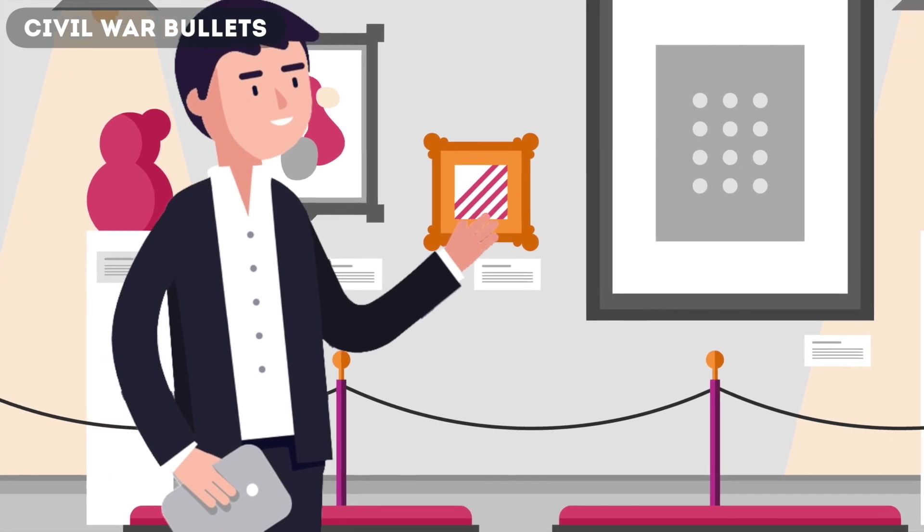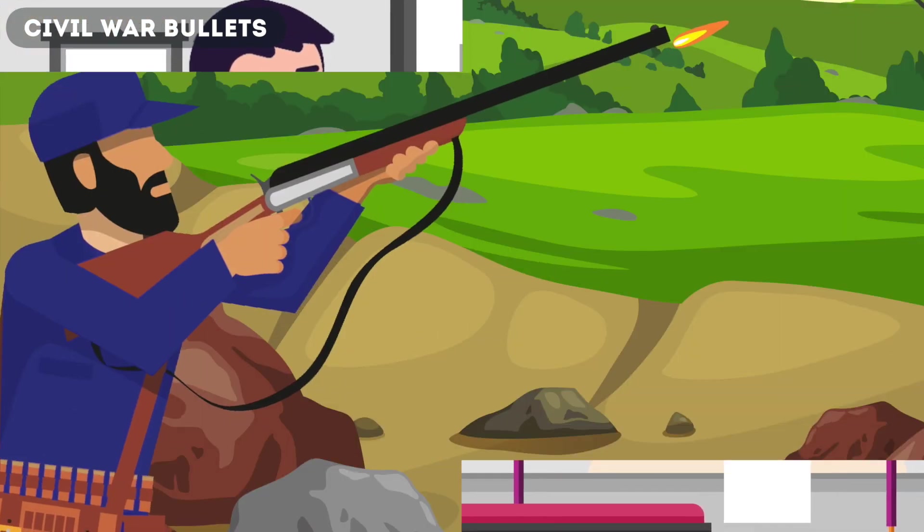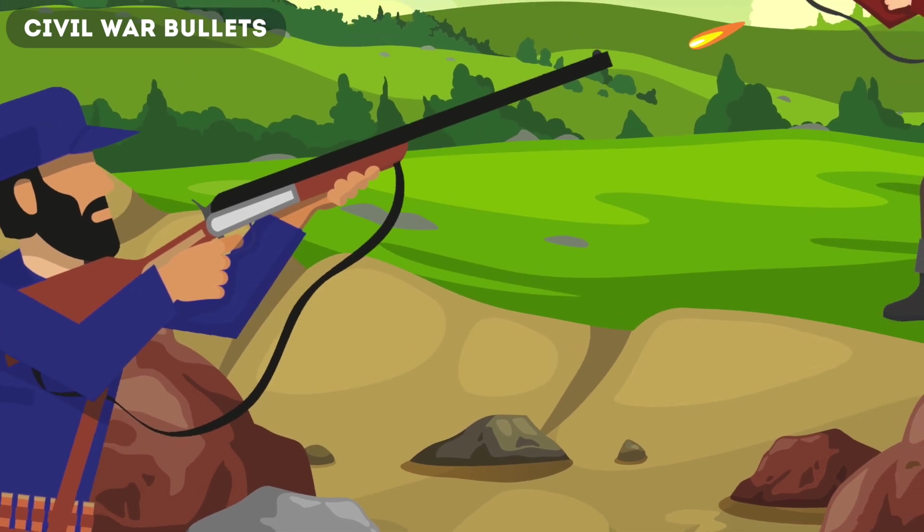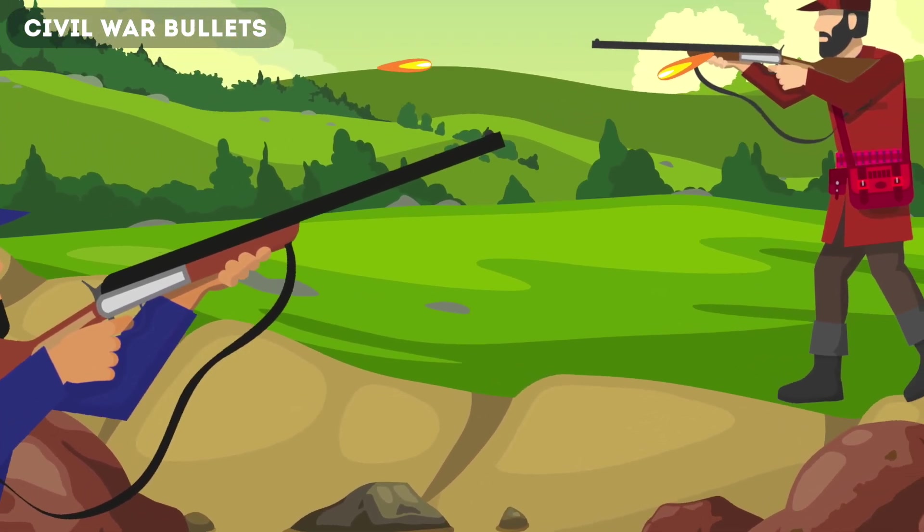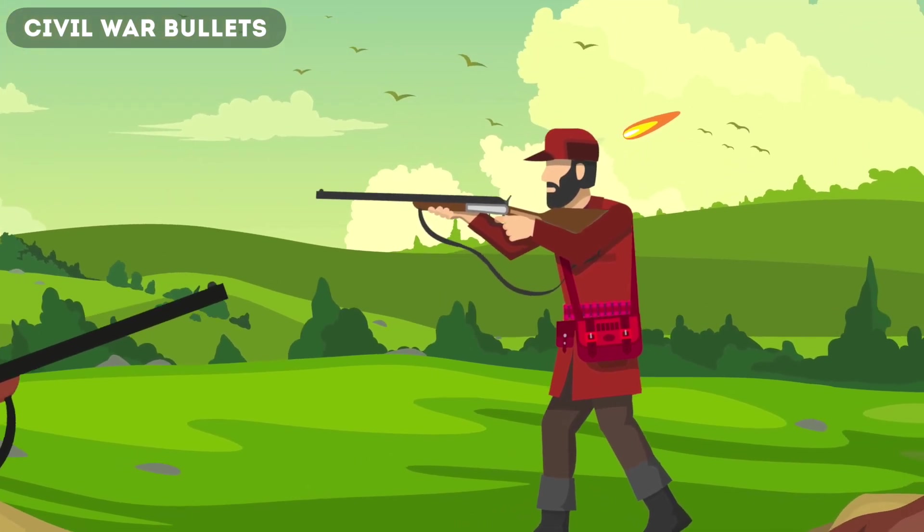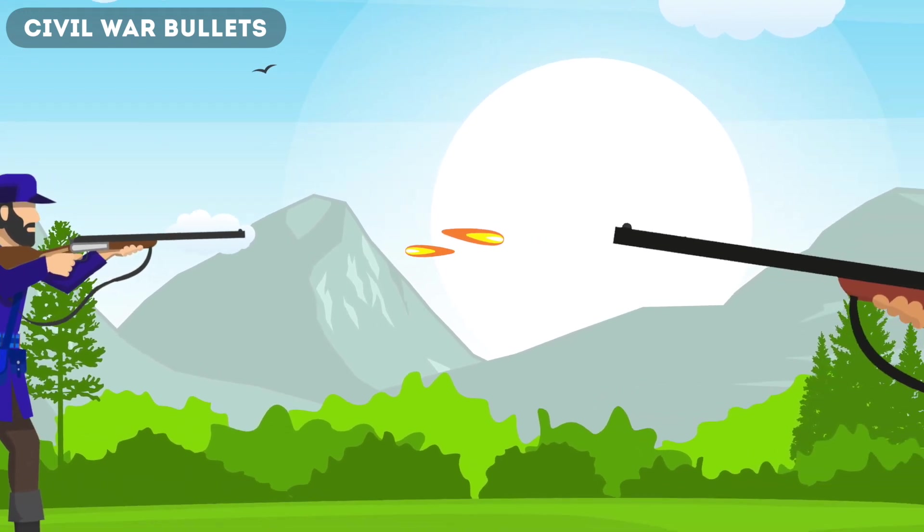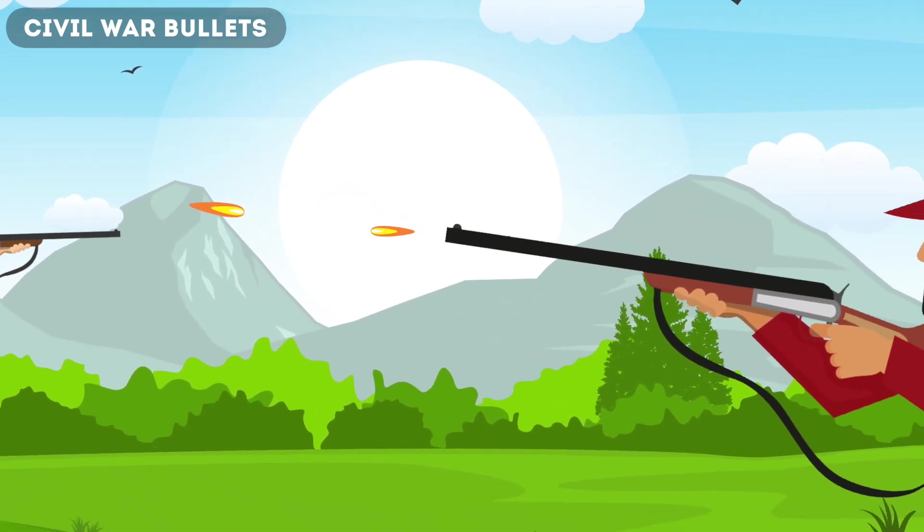Well, if you go to Gettysburg National Military Park Museum in Pennsylvania, you can see that in real life, nearly 7 million bullets were fired at the Gettysburg battle by 160,000 infantrymen. And because so many bullets were fired, something very rare happened. That is, the two bullets collided in midair.